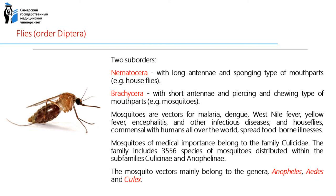Diptera has two suborders: Nematocera, with long antennae and sponging-type mouthparts — for example, house flies — and Brachycera, with short antennae and piercing and chewing mouthparts — for example, mosquitoes. Mosquito vectors can transmit several pathogens including arboviruses, protozoans, and filariae that cause infectious diseases of significant public health concern. To a lesser extent, they may also transmit bacterial diseases. Mosquitoes of medical importance belong to the family Culicidae and are widely distributed around the world.